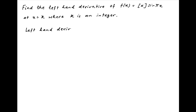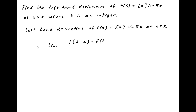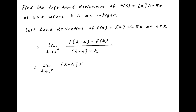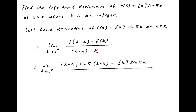The left-hand derivative at the point x = k of the function f(x) = ⌊x⌋·sin(πx) is given by the limit of f(k − h) − f(k) divided by (k − h) − k, where h tends to 0 from the positive side. The numerator is ⌊k − h⌋·sin(π(k − h)) minus ⌊k⌋·sin(πk), and the denominator simplifies to −h.